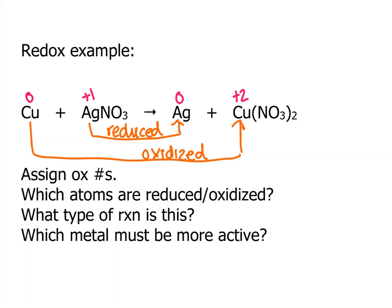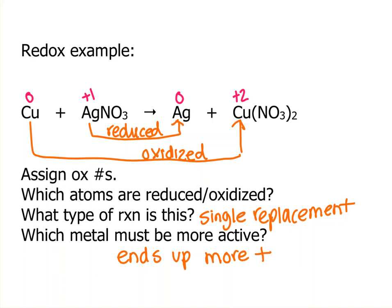What type of reaction is this? We already said it's a single replacement or displacement. And which metal must be more active? So the more active metal is the one that ends up more positive, or is a cation, or it ends up in the compound, and that would be the copper.